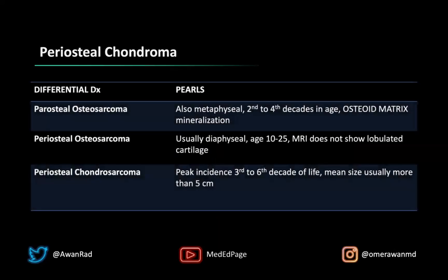Regarding the differential: parosteal osteosarcoma and periosteal osteosarcoma are bone-forming tumors, not chondroid. They result in osteoid matrix mineralization, not chondroid matrix, with fluffy new bone formation that's often dark on both T1 and T2 due to bone content. Parosteal osteosarcoma is also metaphyseal and occurs in the second to fourth decade, but it shows exuberant osteoid mineralization and fluffy new bone — not as well-defined as this periosteal chondroma.